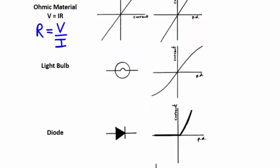Another example of a non-ohmic material is a diode. A diode is an electronic component that only allows voltage to flow one way.